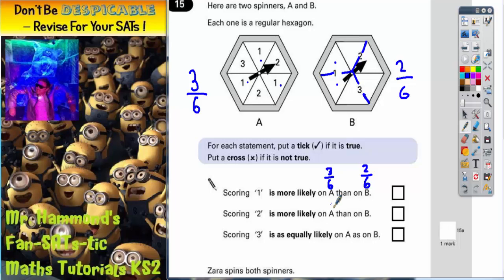So, is it more likely on spinner A than on B? Well, yes it is because three out of six is more likely than two out of six. So, that first statement we need to tick.